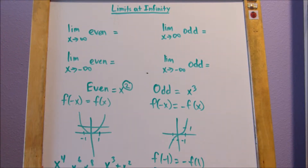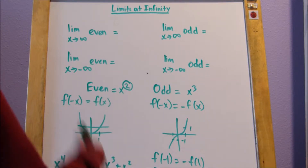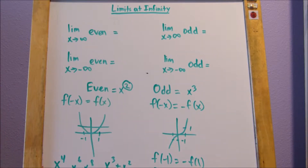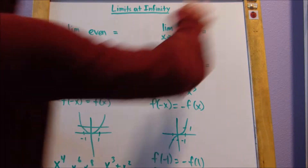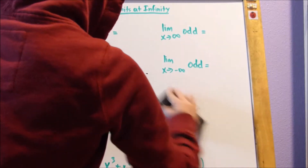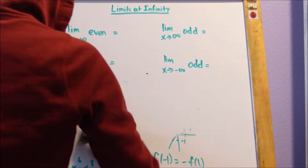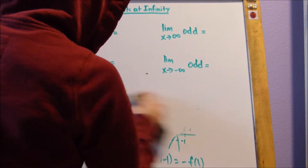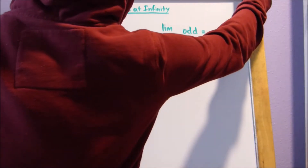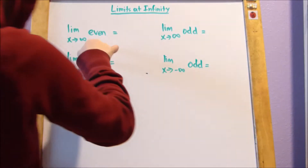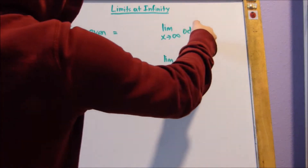Like I said before, if you were to have x to the 4th plus x to the 3rd, that's not odd. That's even because the highest exponent is 4, not 3. So now that we know that, we can determine the limit at infinity of even and odd functions.